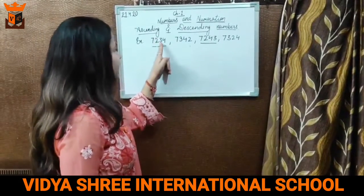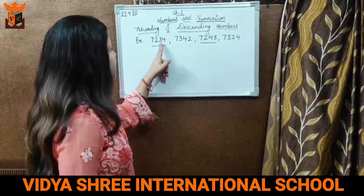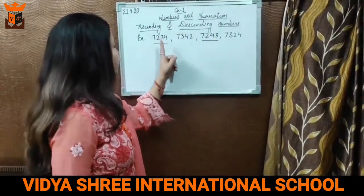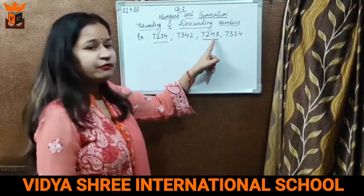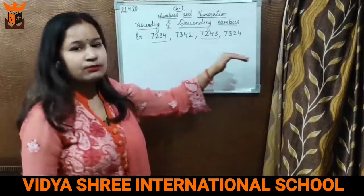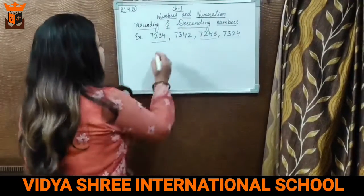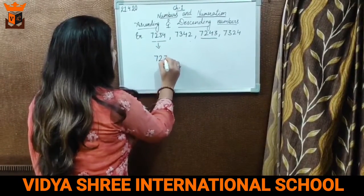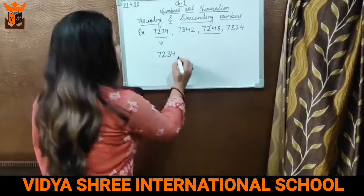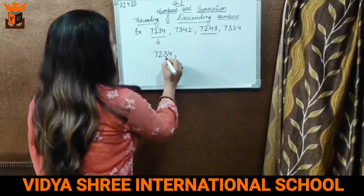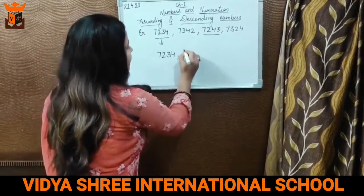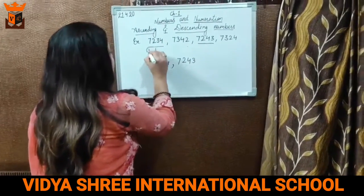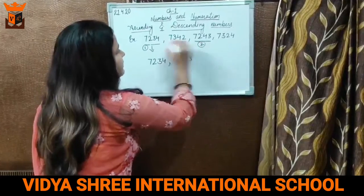Now we have to move on to the tens place. Here on the tens place, there is 3 and on the other tens place there is 4. So 3 is always smaller than 4. Which one is the smallest number among all? The first number, 7234, is the smallest number among all. After that, the next bigger number is 7243 — this will be second.